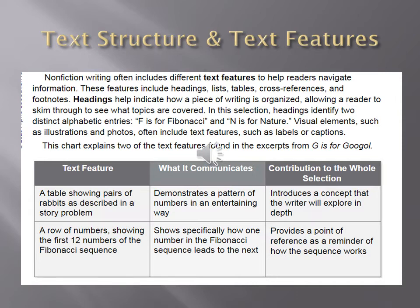The first text feature is a table showing pairs of rabbits as described in a story problem. What it communicates: it demonstrates a pattern of numbers in an entertaining way. The contribution to the whole selection: it introduces a concept that the writer will explore in depth.